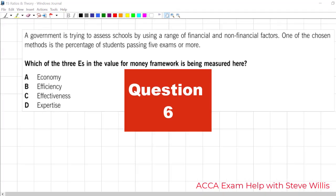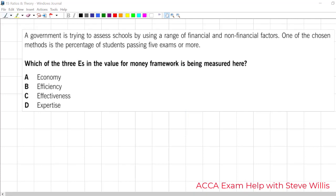And our final question in the set, another three E's type of question. This one's quite easy. It's only a line and a half. A government is trying to assess schools by using a range of metrics. One of the chosen methods, percentage of students passing five or more exams. Well, nothing about resources, nothing about inputs, nothing about cost. It's not economy.